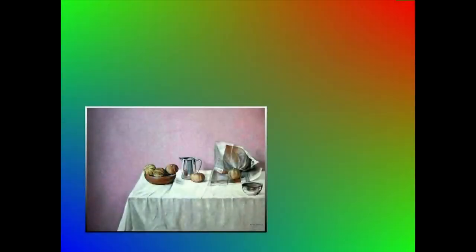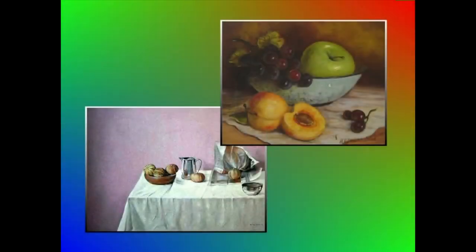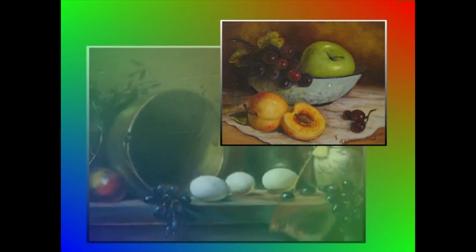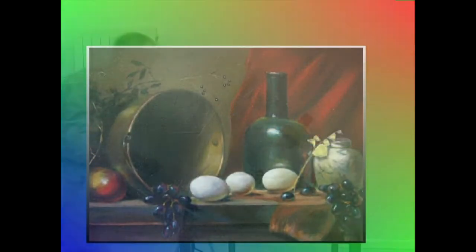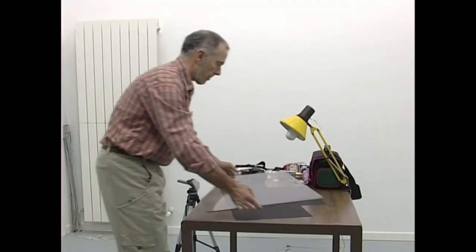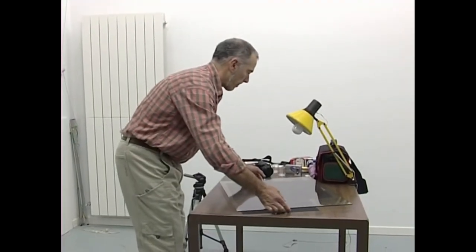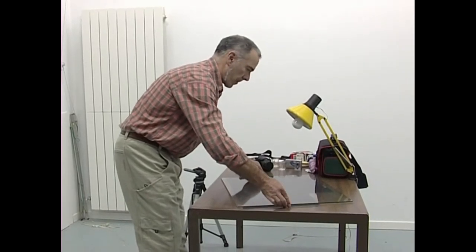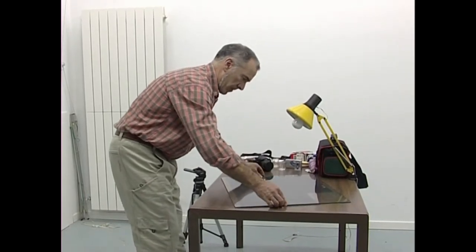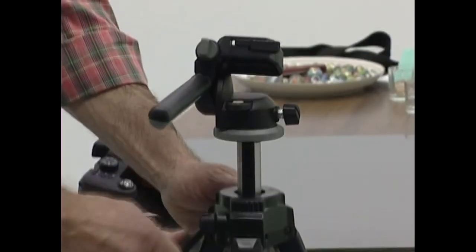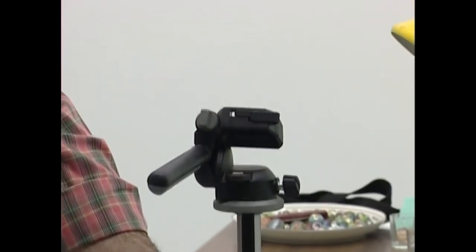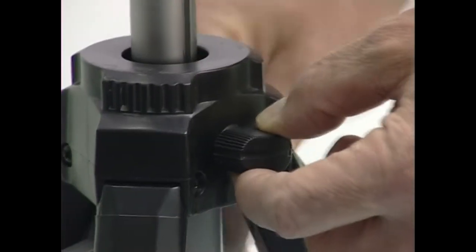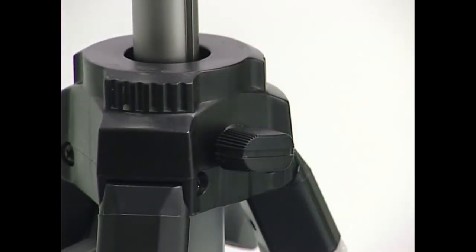Bodegoia aspaldiko oitura da. Hamazazpigarren mendeko margolariak asiziren bodegoiak egiten. Bodegoien argazkiak egiteak, bai elementuen komposizioaren eta kokapenaren alorrean, bai argistapenaren alorrean, sormena garatzeko aukera apartak eskaintzen ditu.